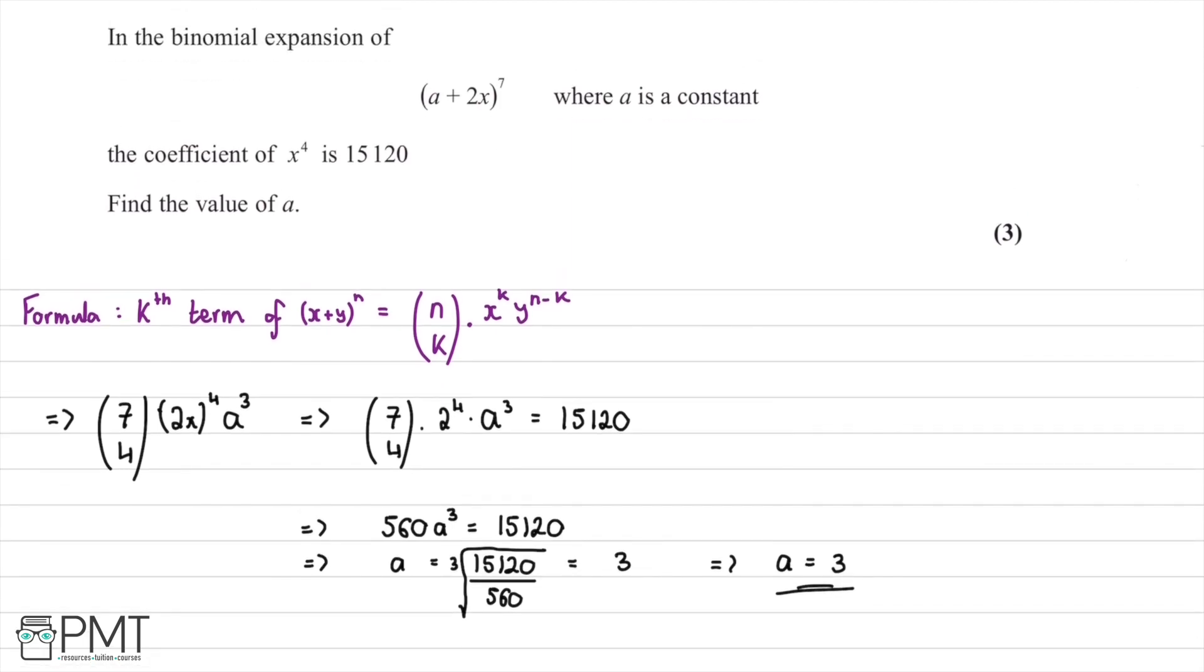This question was worth three marks. We received our first mark for having an expression like this, when we began to work out the correct coefficient of x to the power of 4. We received our second mark for working out this and getting an expression in terms of a cubed. Then we received our third and final mark for concluding with the correct answer, that a was equal to 3.